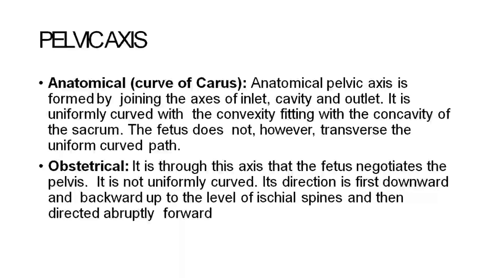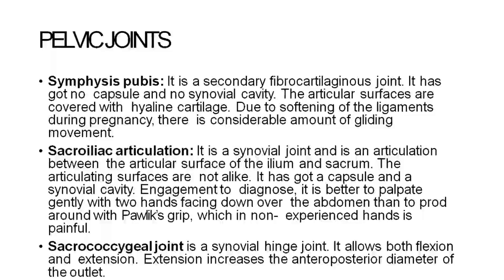Pelvic axis: The anatomical or curve of Carus is formed by joining the axes of the inlet, cavity, and outlet. It is uniformly curved with convexity fitting the concavity of the sacrum. The obstetrical axis is the path through which the fetus negotiates the pelvis. It is not uniformly curved — its direction is first downward and backward up to the level of the ischial spines, then it turns abruptly downward and forward.